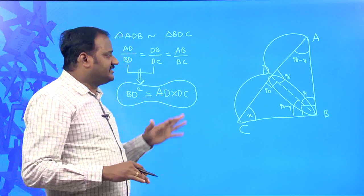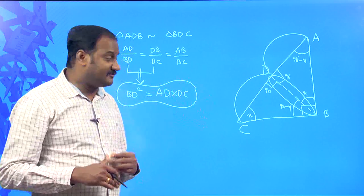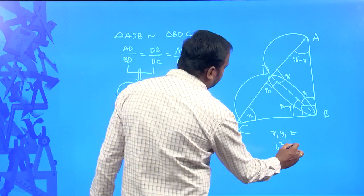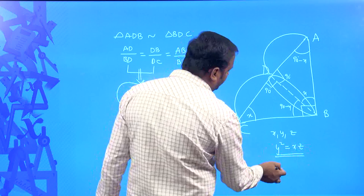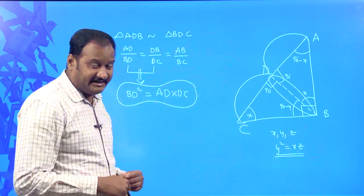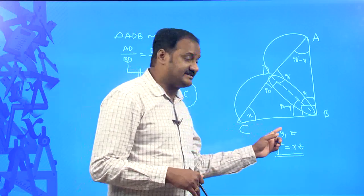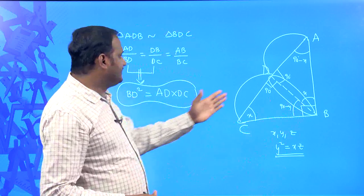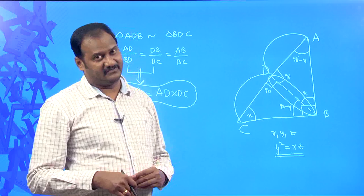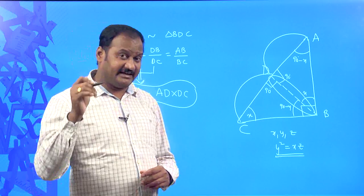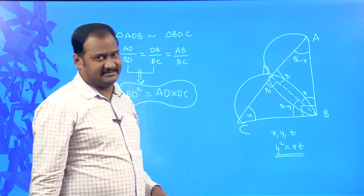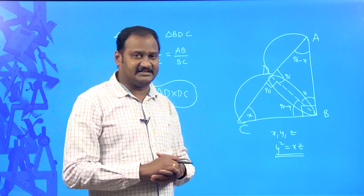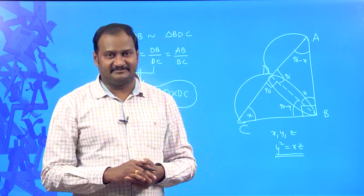Can you tell something about BD in relation to AD and DC? Suppose you have terms X, Y, Z such that Y² = XZ. Then Y is said to be the mean proportional between X and Z. Like that, here BD is the perpendicular, and any perpendicular drawn from the right vertex of a right angle triangle is the mean proportional between AD and DC. Please remember that BD² = AD × DC. This is one of the important applications of Pythagorean theorem. Hope you understand. Thank you.